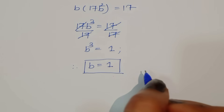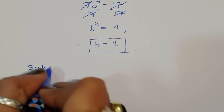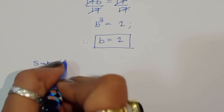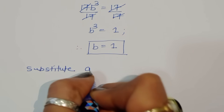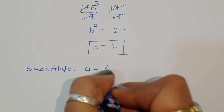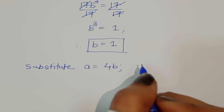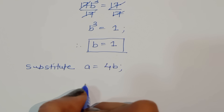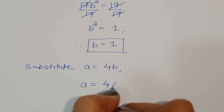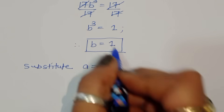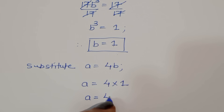Now substituting b = 1 into a = 4b: a = 4 × 1 = 4. So a = 4.